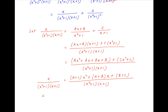Since the denominators are the same, equating terms with like powers of x: a plus c equals 0 (coefficient of x squared on the left is 0), a plus b equals 1, and b plus c equals 0. The first equation implies c equals minus a; the third implies c equals minus b.